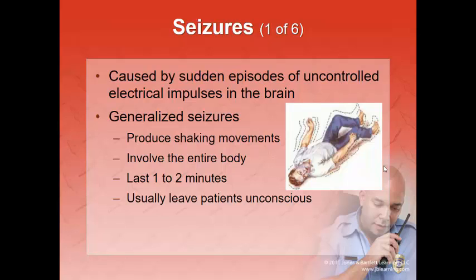Some people know they're going to have a seizure — it's called an aura. They'll smell something or get a metallic taste in their mouth and lay down. Some people have seizure dogs — the dogs actually alert them when they're going to have a seizure. Then they have that couple of minutes of tonic-clonic activity, and then maybe five to ten minutes of a very sublime postictal coma state afterwards.